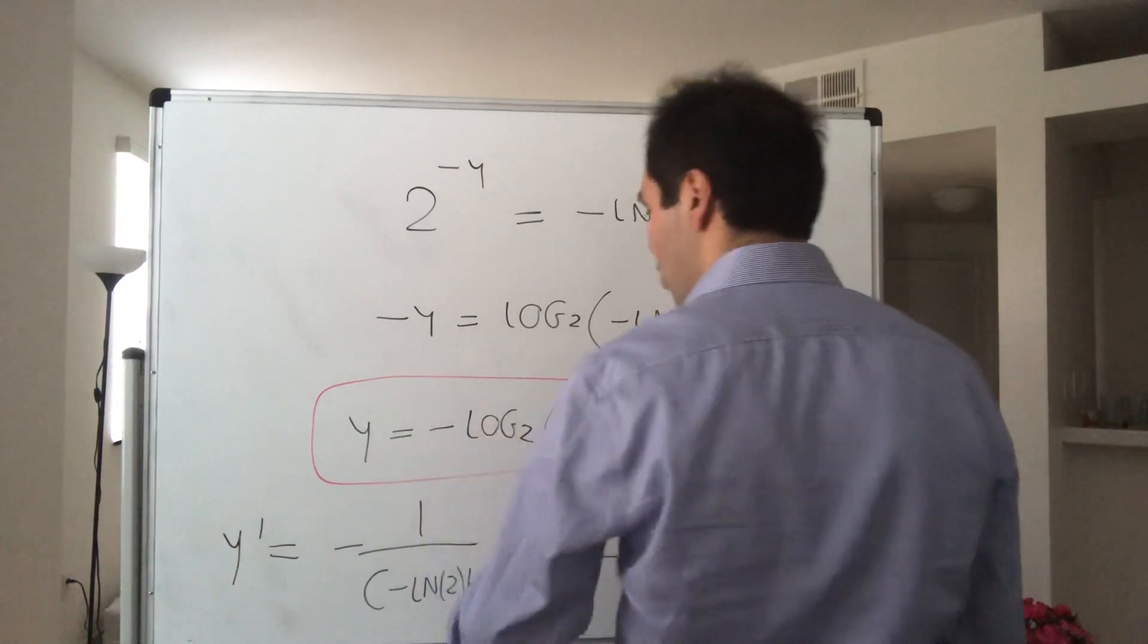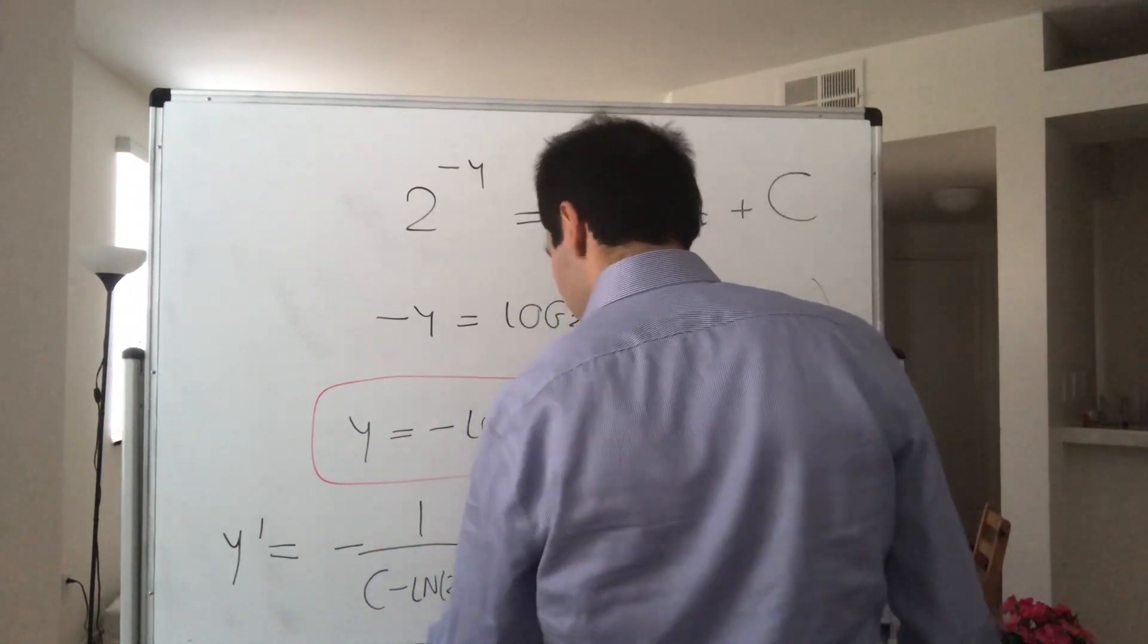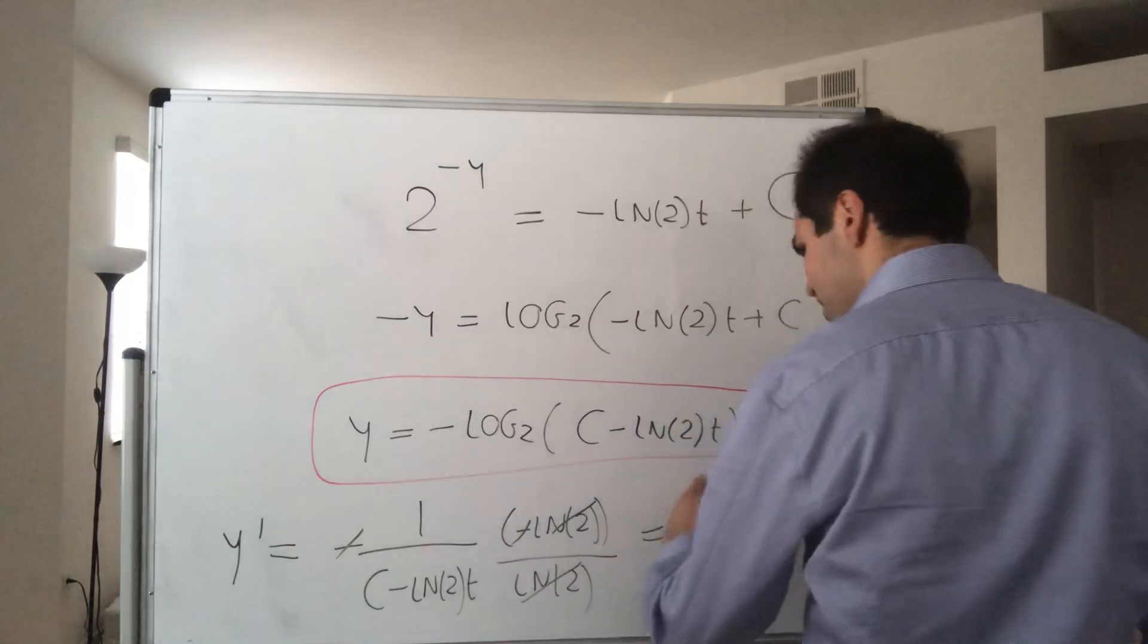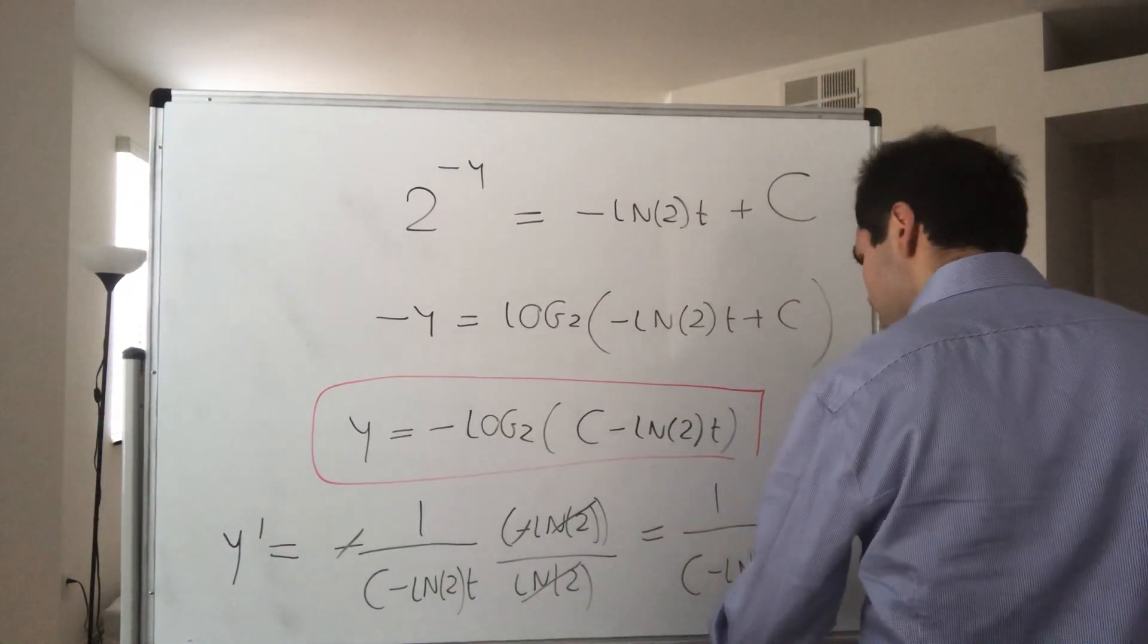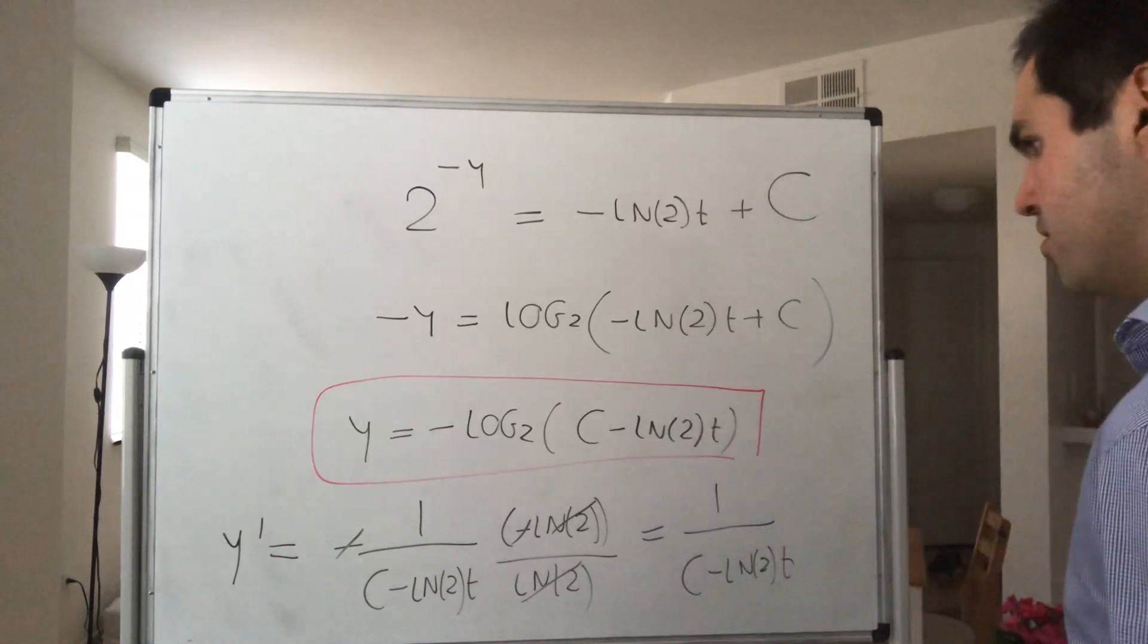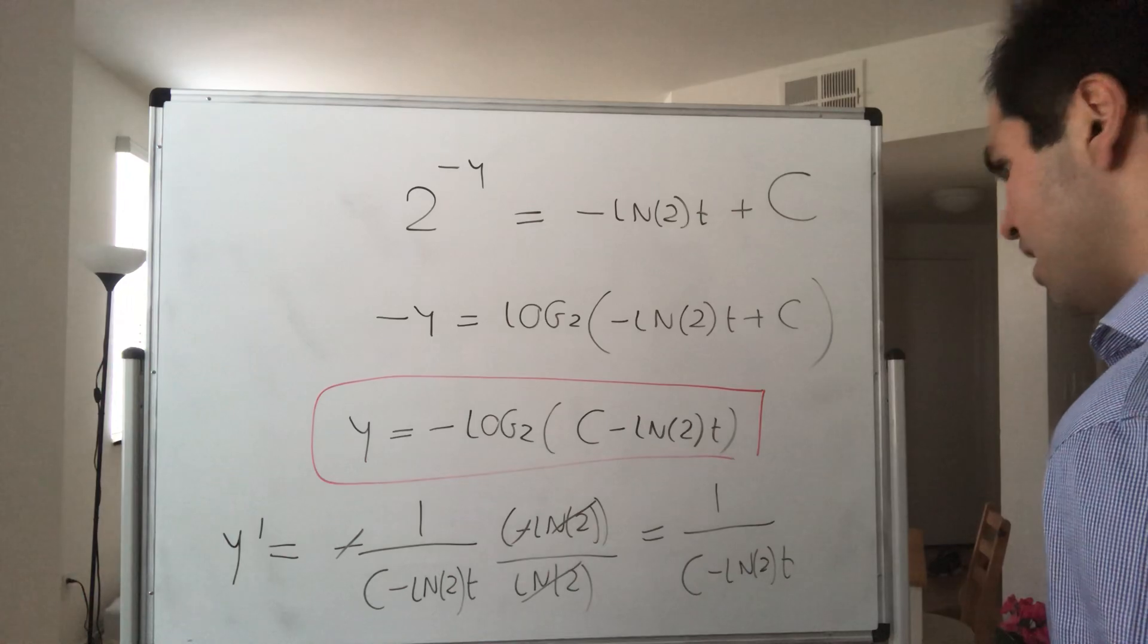So it simplifies to one over c minus ln of two t. Let me double check. Yes, that's right.